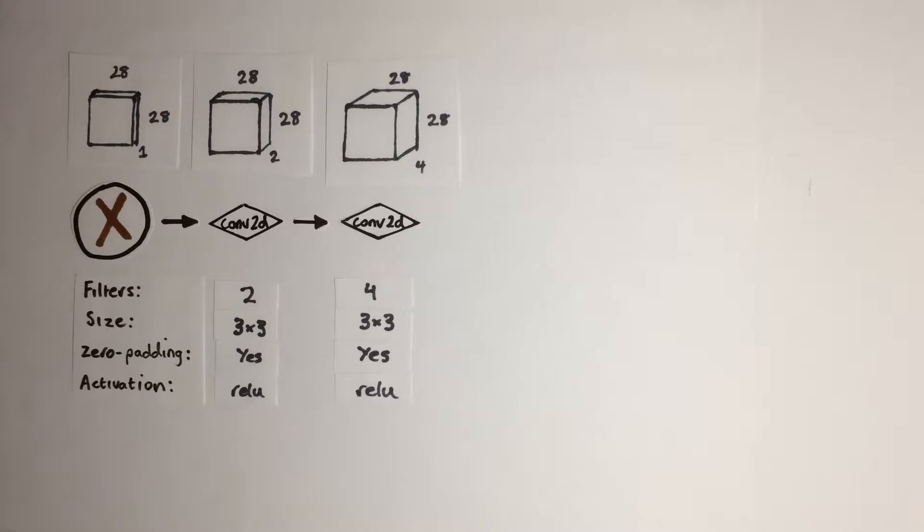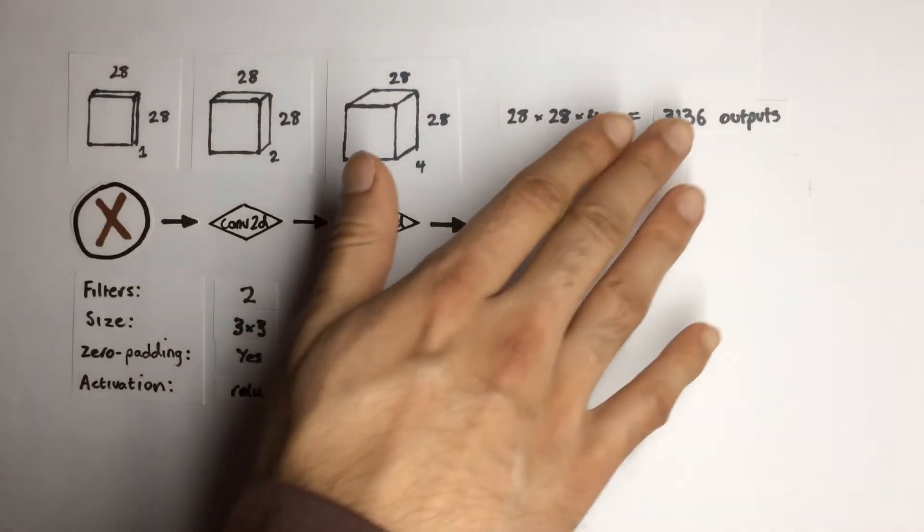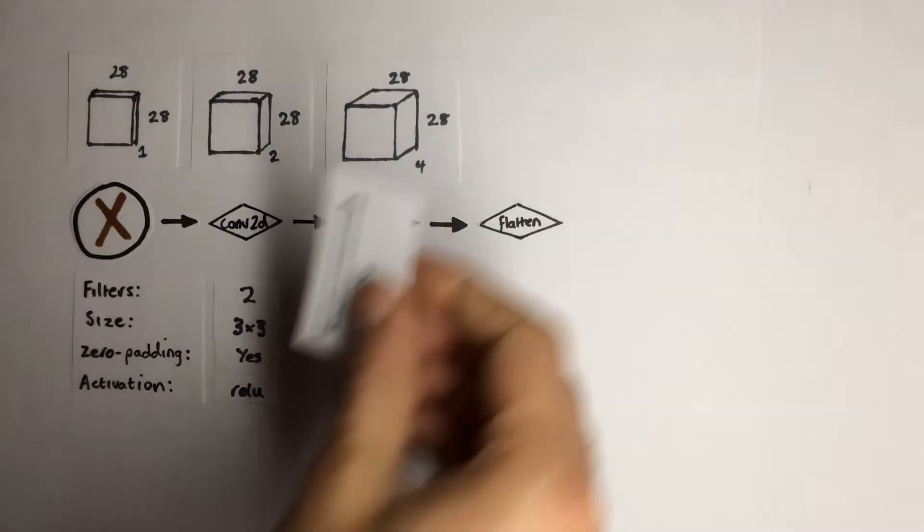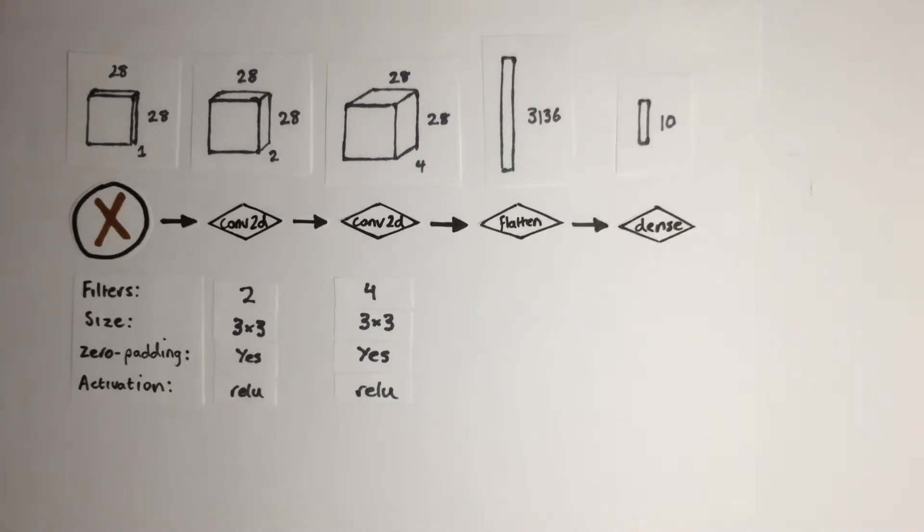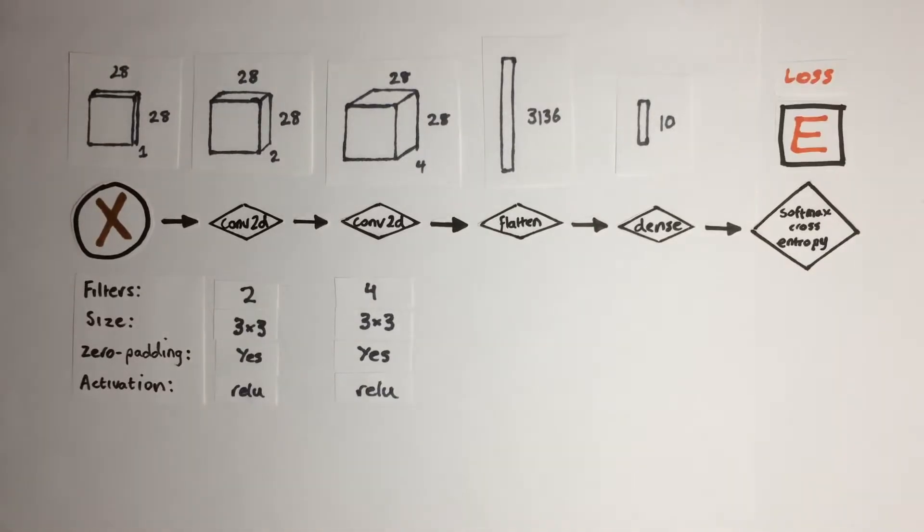Now as before, we need to end up with an output vector of 10 elements for our probabilities, so we need to flatten this 3D layer into a 1D vector. Since this output has four 28x28 matrices stacked on top of each other, this would give us 4x28x28 equals 3136 output values. We can actually use TensorFlow's flatten operation which automatically reshapes any multi-dimensional input into a 1D vector without us having to calculate the number of output values ourselves. Finally, we can use a dense layer to transform this vector to a size of 10 outputs as the logits for us to calculate the loss with the softmax cross-entropy equation from last video.